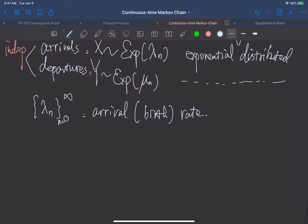And then we have another infinite sequence, which is μ_n, that represents departure rate, which is also, we name it death rate.